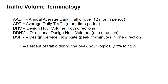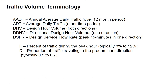We adjust these various values with some common factors. K is the percentage of traffic during the peak hour — out of the whole day, what percent occurs during that peak hour. This is typically between 8 and 12 percent, depending on a particular location. D is the directional factor — the proportion of traffic traveling in the predominant direction, typically between 0.5 and 0.7, most commonly in the 0.55 to 0.65 range.